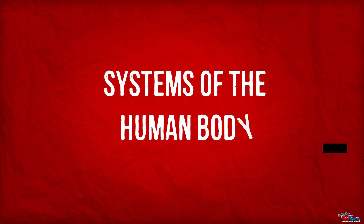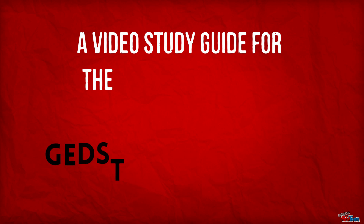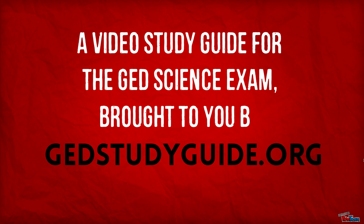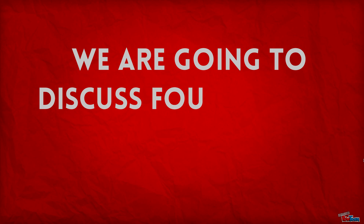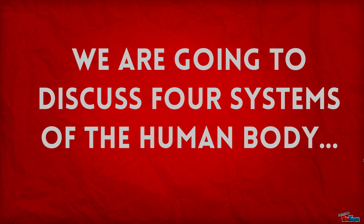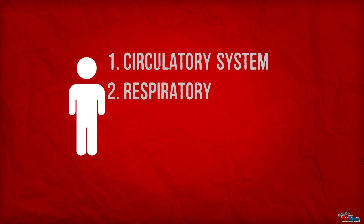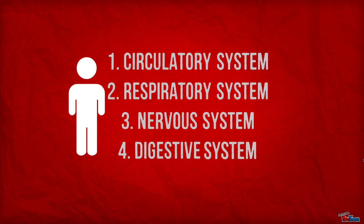Systems of the Human Body. A video study guide for the GED Science exam brought to you by gedstudyguide.org. We are going to discuss four systems of the human body: the circulatory system, the respiratory system, the nervous system, and finally the digestive system.